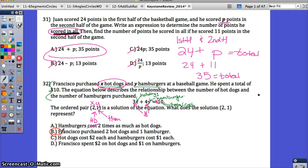Let's just check the other ones. Hot dogs cost $2 each and hamburgers cost $1 each—no, we already determined from this equation the cost of hot dogs is $3 and hamburgers is $4. Francisco spent $2 on every hot dog and $1 on every hamburger—again, the cost is wrong. So B, that ordered pair represents that Francisco purchased two hot dogs and one hamburger, is the correct answer.